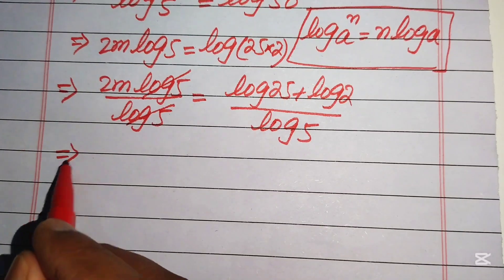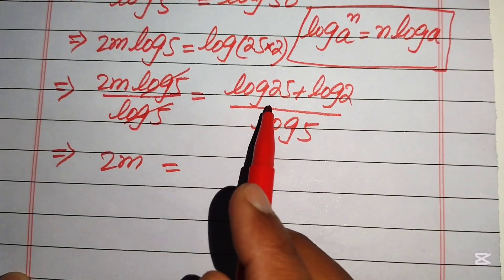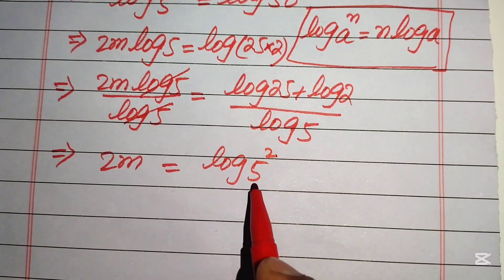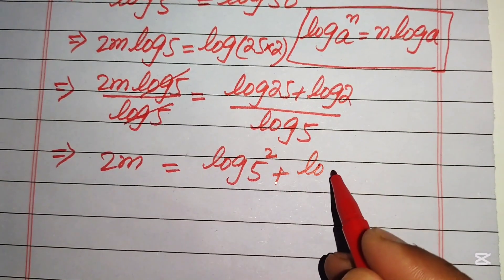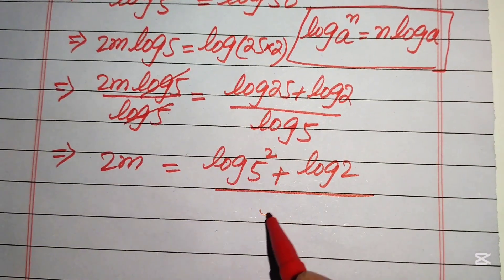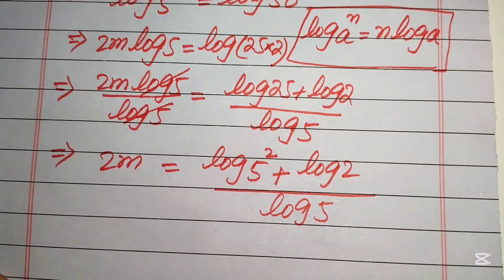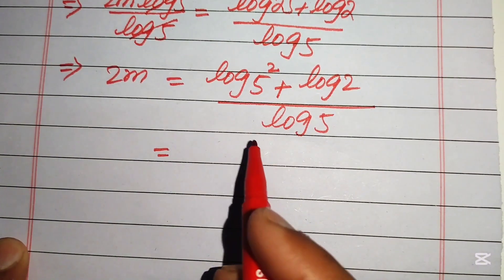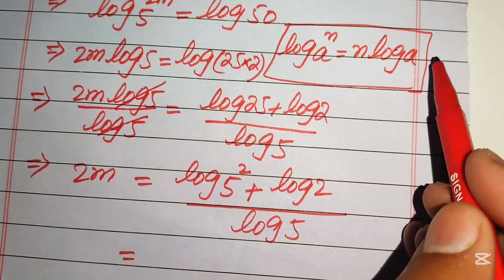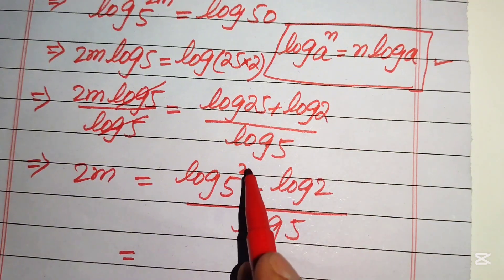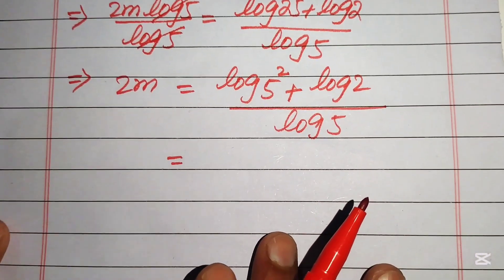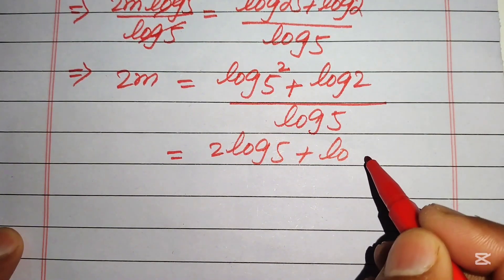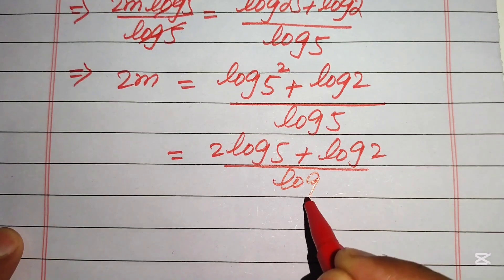The log(5) terms cancel, giving 2m equals log(25) plus log(2), divided by log(5). We rewrite log(25) as log(5²), and by the power rule, that becomes 2·log(5). So we have 2m equals 2·log(5) plus log(2), all divided by log(5).